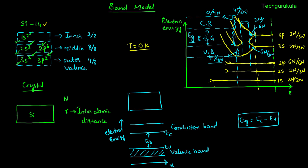Eg is temperature dependent because the equilibrium interatomic distance changes with temperature. At T = 0 K, we have a certain interatomic distance. As temperature increases, materials expand so the interatomic distance increases, and the energy gap seen on the graph becomes smaller. Therefore, when temperature increases, the energy band gap decreases.